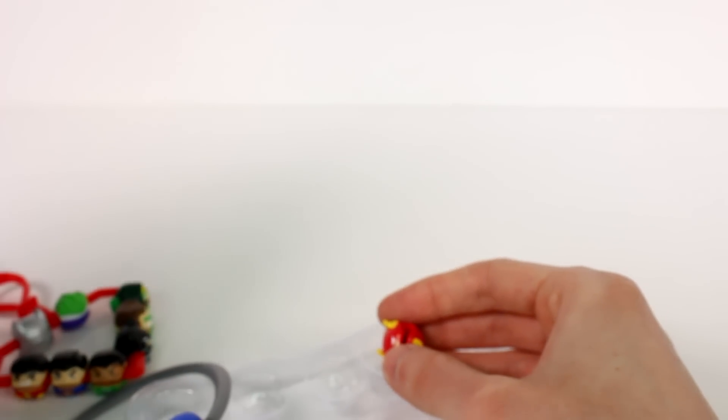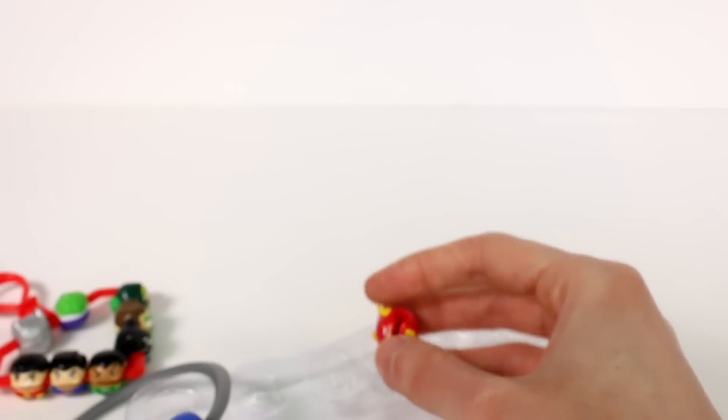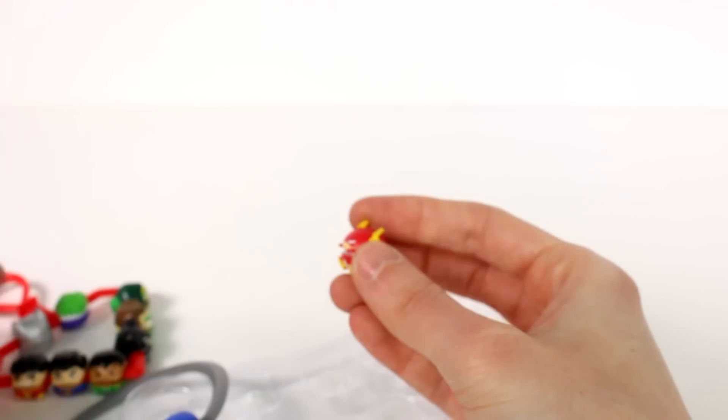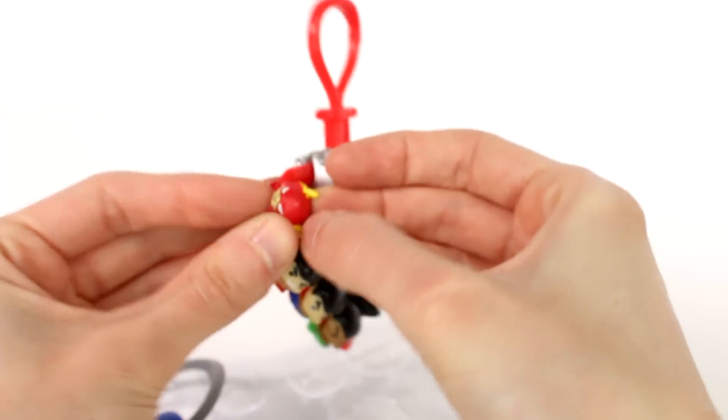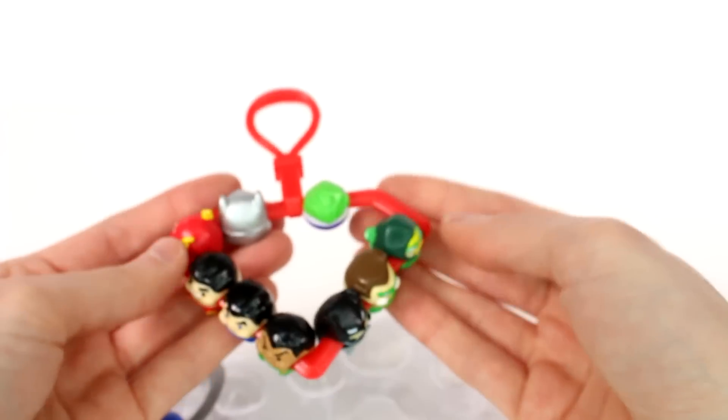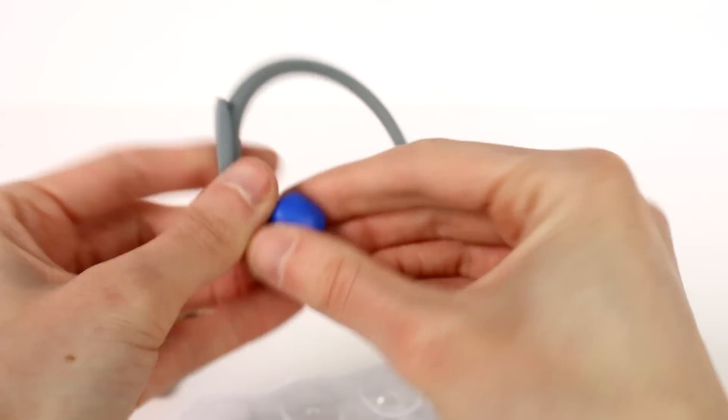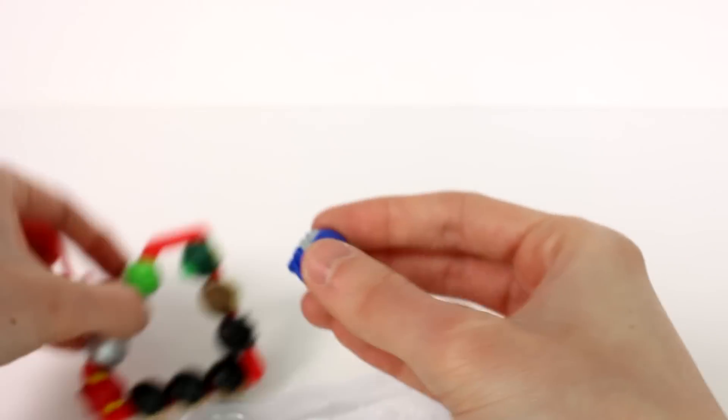And what's this one? We have the Flash. How many are there total to collect if it says? It just says collect them all. I don't know. I'm not sure how many there are. But anyway, that's Flash. And we put him on here as well. I think we can fit one more on here. Maybe? Nah, just probably one more.